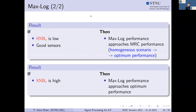While if the SNR is high, then independent of what kind of sensor we are using — good or not, homogeneous or not — max-log performance is always approaching optimum performance.